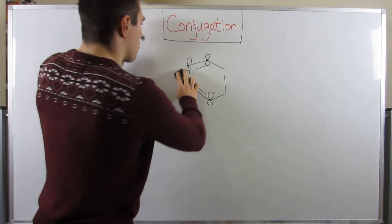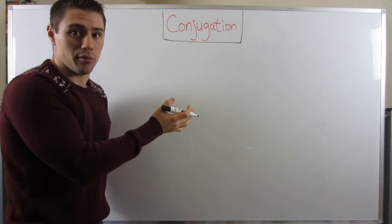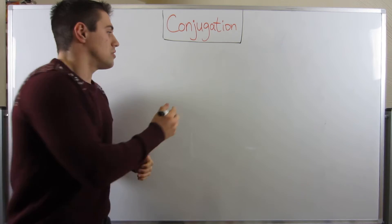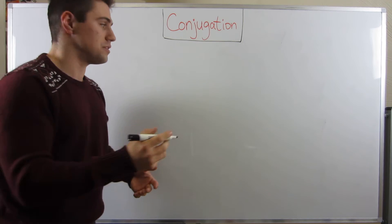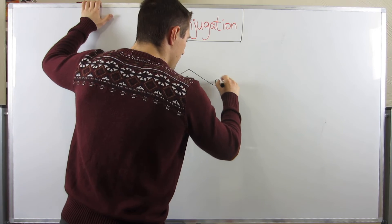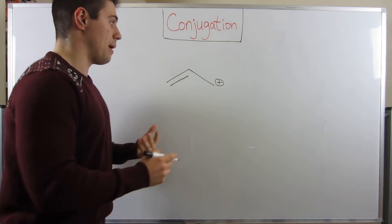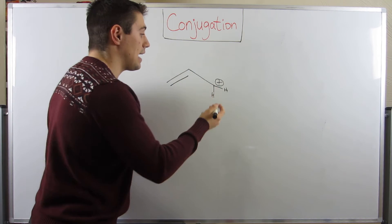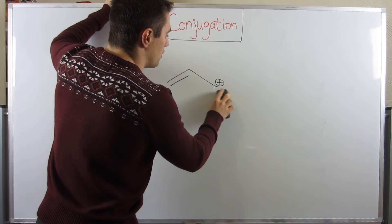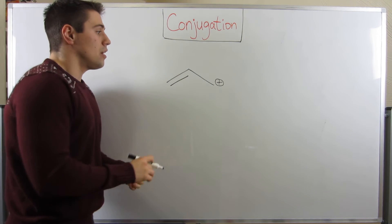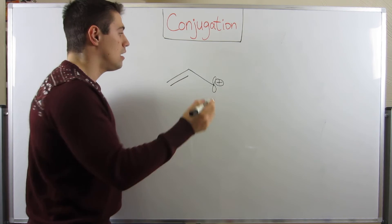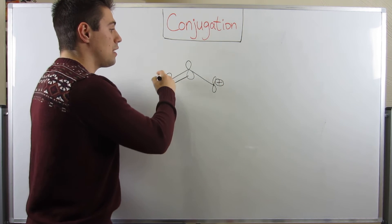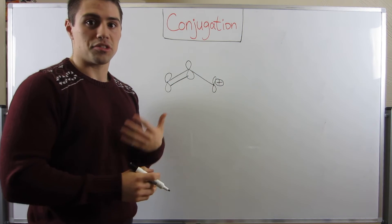We can have conjugation through double bonds, but also through atoms that are SP2 hybridized without being part of a double bond. For example, a carbocation: with only three bonding areas, it's SP2 hybridized and has an empty unhybridized P orbital. Carbocations have that trigonal planar structure. So carbocations can participate in and help link together these systems of P orbitals to support conjugation.